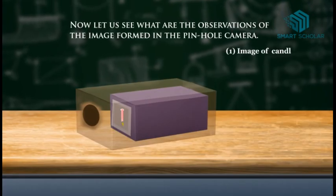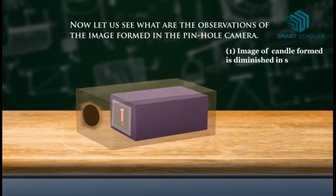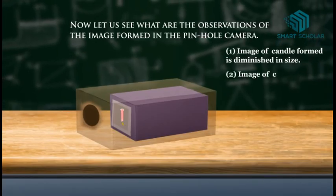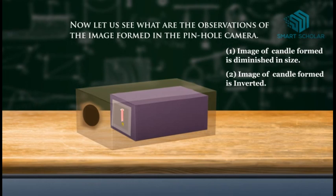Number 1: Image of a candle formed is diminished in size. Number 2: Image of a candle formed is inverted. Number 3: Image of a candle formed has color.